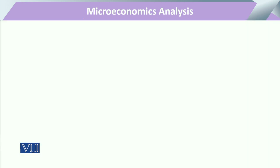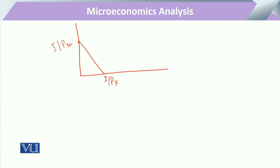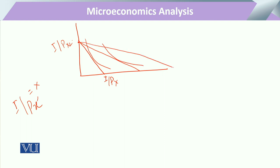Drawing this again in a simple manner: here is our initial budget line. On the x-axis the amount of one commodity, representing income divided by price of x1, and income divided by price of x2 on the y-axis — two commodities — and the indifference curve is tangent to it. With a change in price, if the price of x decreases, income divided by price of x prime means the denominator is less, so the amount of x will be more. The consumer may reach a higher indifference curve, and potentially a third level.